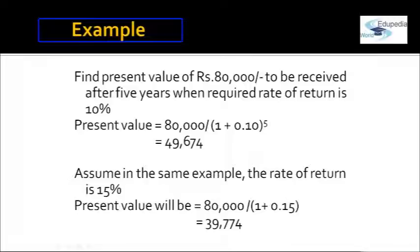So 49,674 today is worth the same as 80,000 after five years — confirming that money has more value today than tomorrow. In the same example, if the required rate of return is 15%, the present value decreases to 39,774. This implies that if the rate of return is higher, money is more discounted — meaning when the rate is 15%, 39,774 today equals 80,000 after five years.